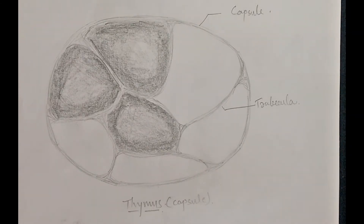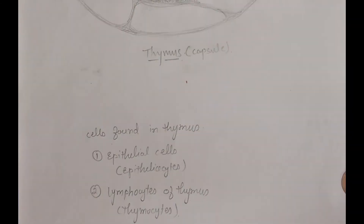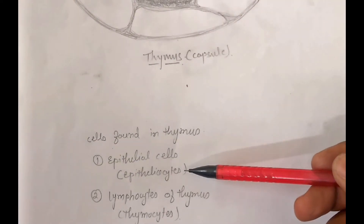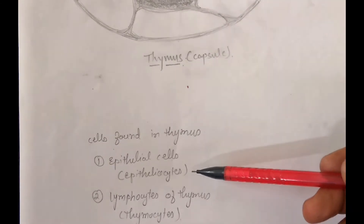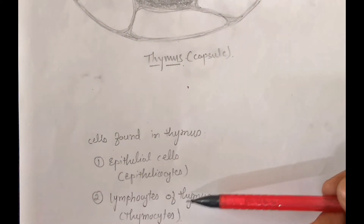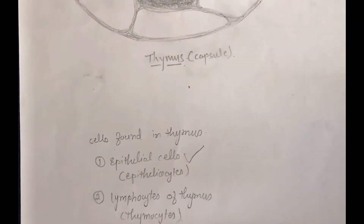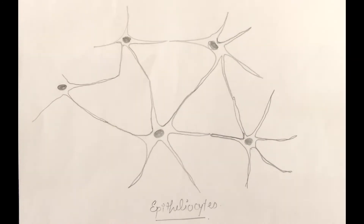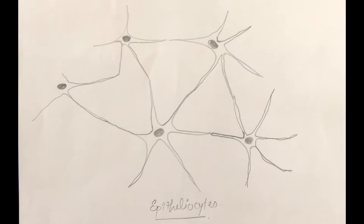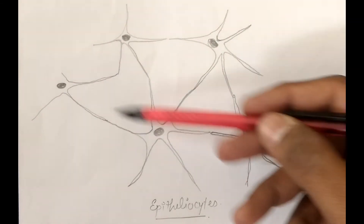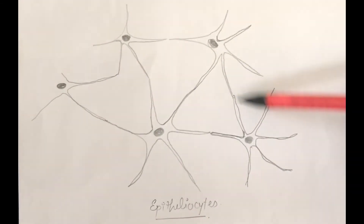Now we will learn about the cells of the thymus. In the thymus, mainly two types of cells are found. The first type are known as epithelial cells, also known as epitheliosites. The second type are lymphocytes, known as thymocytes. Epitheliosites possess long processes which join similar processes from other epitheliosites, and in this way they form a network inside the lobule of the thymus.